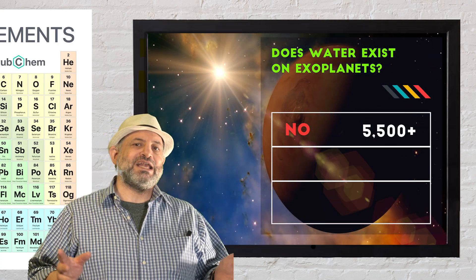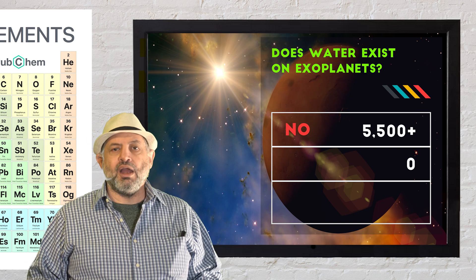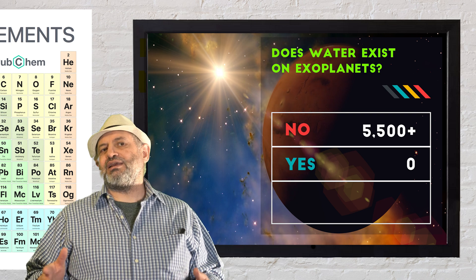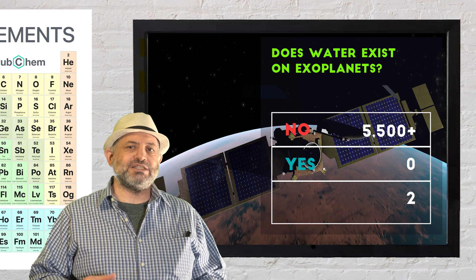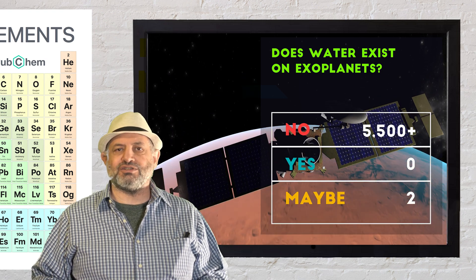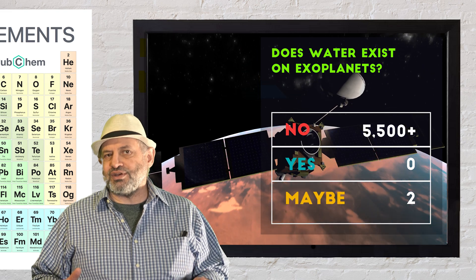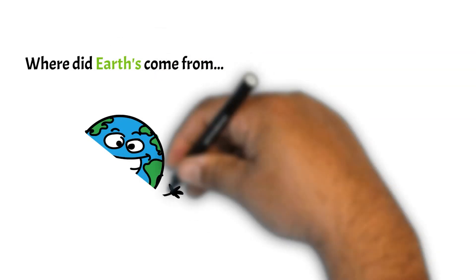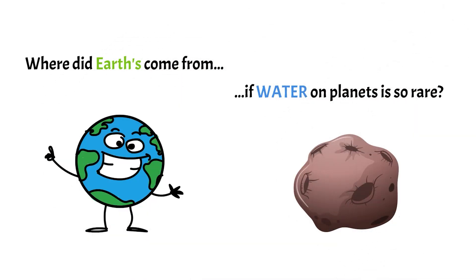Of course, that is not to say we won't eventually find exoplanets that do contain water. A planetary system called Kepler-138, which is 218 light years away, shows promise. Based on the sizes and masses of two planets in that system, they may contain water. However, other observations have yet to verify that finding. This begs the question, where did Earth's water come from if water on planets is so rare?